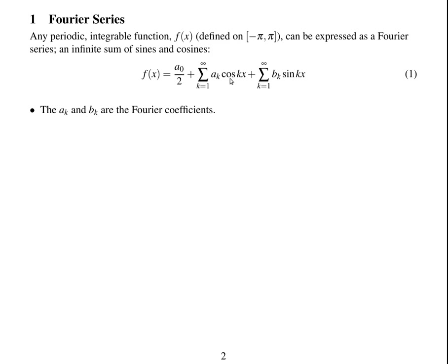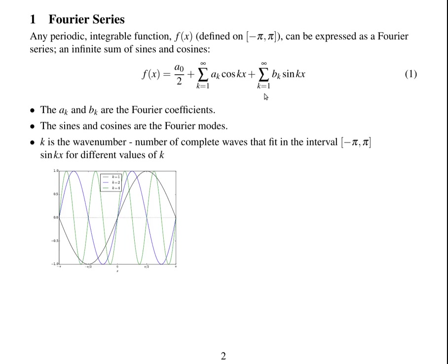Some definitions. The a_k's and the b_k's are the Fourier coefficients. The sines and cosines of different wavelengths are called the Fourier modes. And k is the wave number — the number of complete waves that fit into the interval minus pi to pi. Here's a graph showing sin(kx) for different values of k.